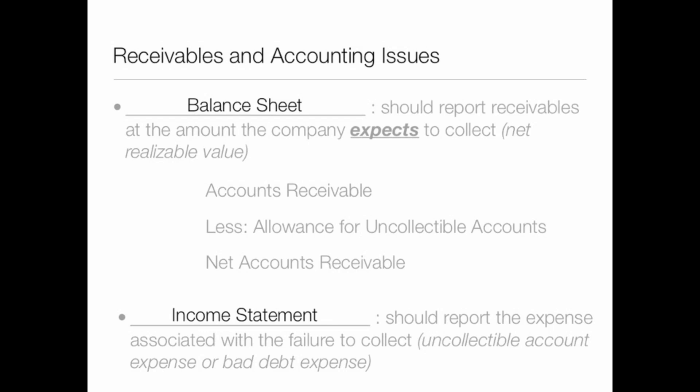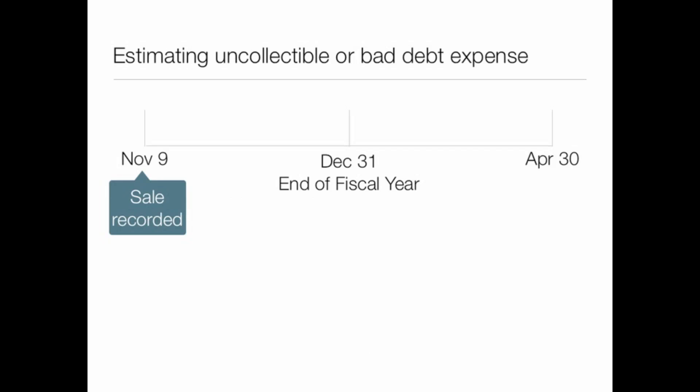Let's look at this journal entry. We're estimating our uncollectable or bad debt expense, and I've given you a timeline. Say on November 9th we made and recorded a sale — remember you record revenues when they are earned, not necessarily when cash is received. We estimate uncollectable accounts using methods we'll cover in part two, such as a percent of sales or an aging schedule. At December 31st, the end of our fiscal year, we need to estimate our uncollectable accounts for that year.